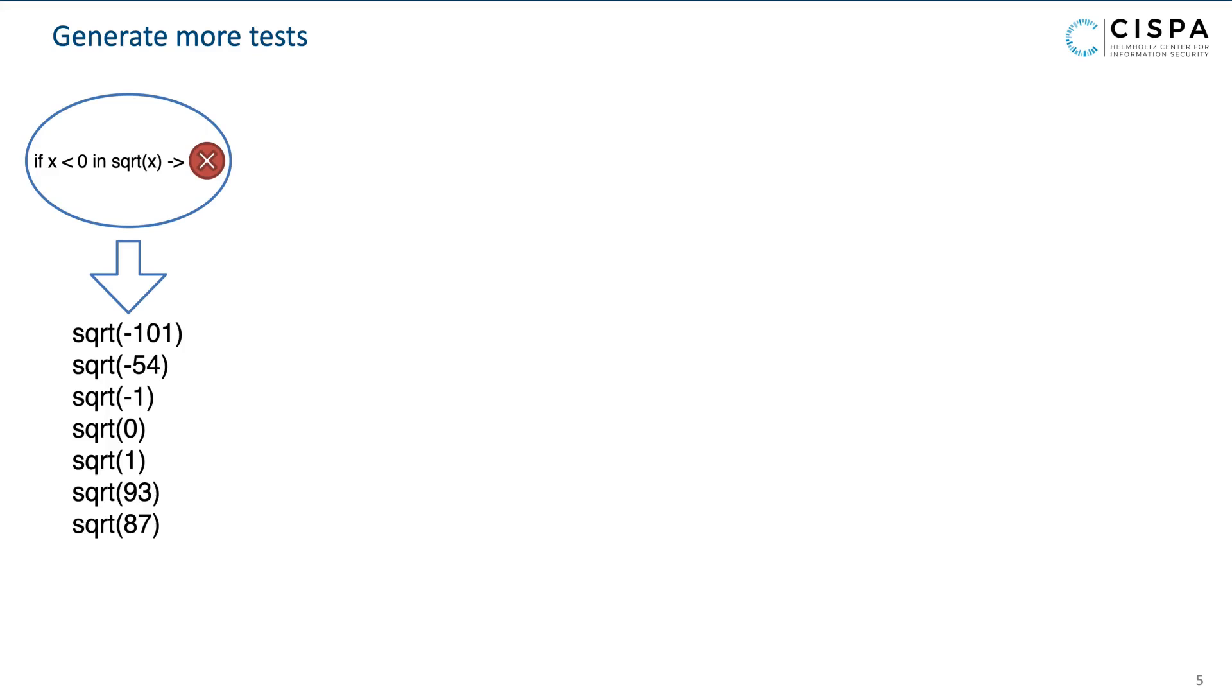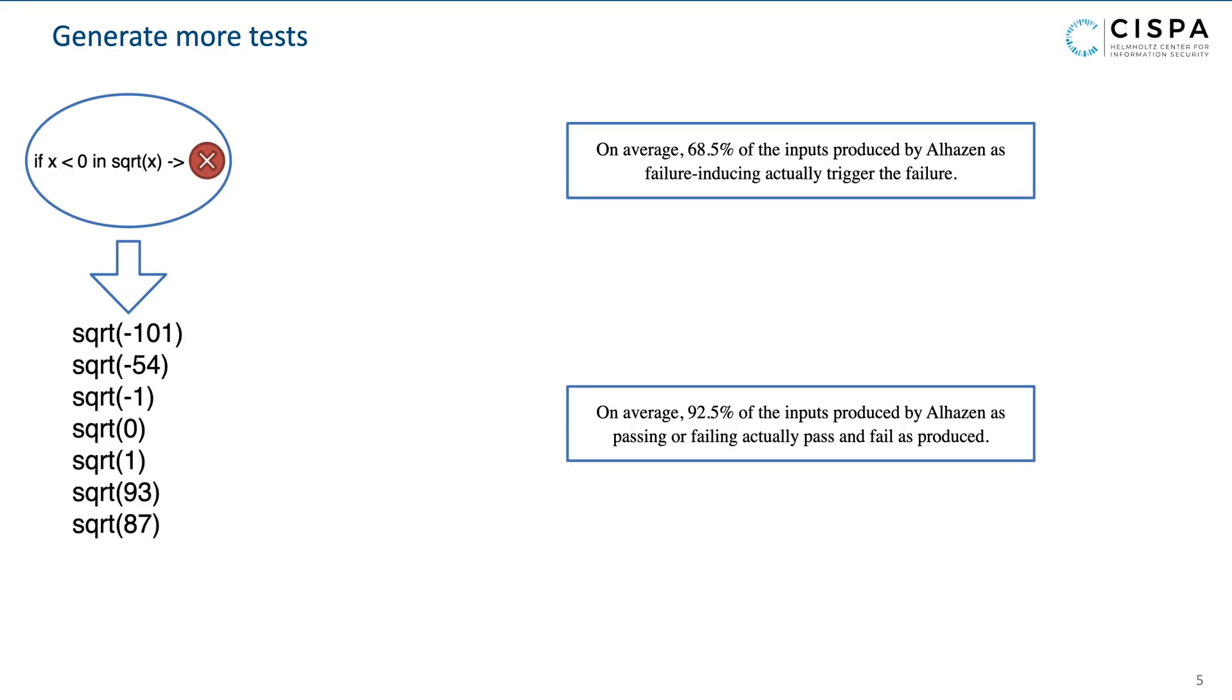On average, 68.5% of all inputs produced by Alhazen as failure-inducing actually trigger the failure. This number even improves if we generate passing and failing inputs. On average, 92.5% of all inputs produced by Alhazen as passing or failing pass or fail respectively.